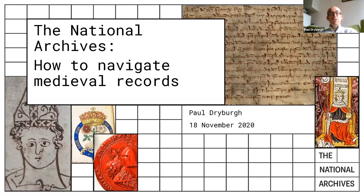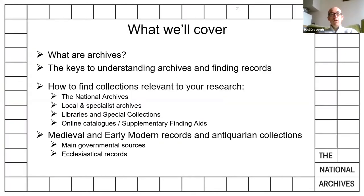Thanks everybody for coming and for your interest in medieval records at the National Archives. My apologies that Amanda can't be with us today. I've tried to cover a little bit of the ground she would cover, but Amanda is our most experienced record specialist, a real expert, so hopefully when she does reschedule her event you can all join that. I'm going to talk about how to navigate medieval records at the National Archives, covering a lot of basic stuff. I'll start with what archives are, how you find records there, how to find collections relevant to your research — whether at the National Archives, in local and specialist archives, or in libraries and special collections — and then talk about online catalogues and supplementary finding aids such as original indexes, printed calendars, and translations.